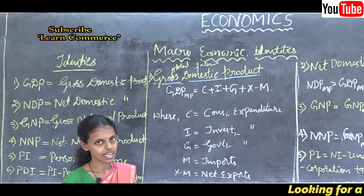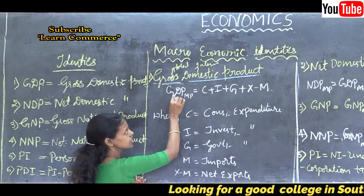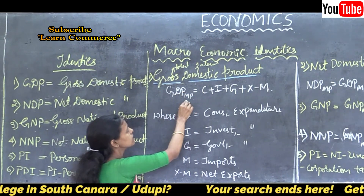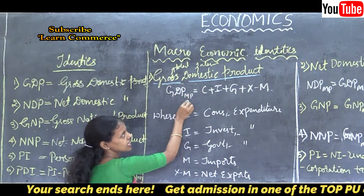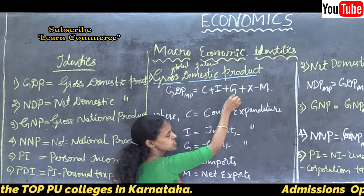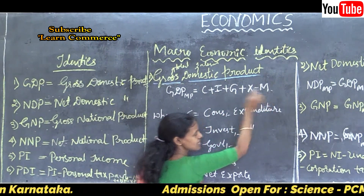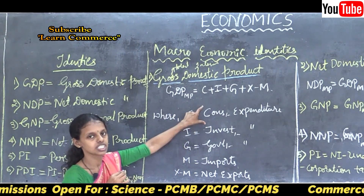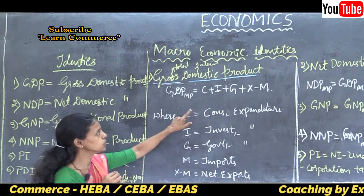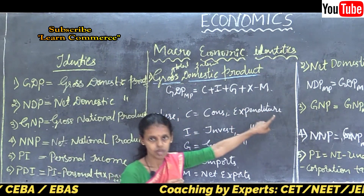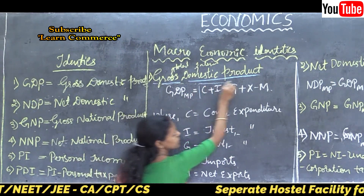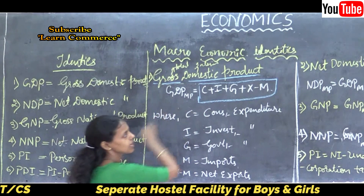While calculating national income we are using the GDP. GDP is the main deflator to calculate national income. The formula is: GDP at market price is equal to C plus I plus G plus X minus M. This is the formula to calculate GDP at market price.